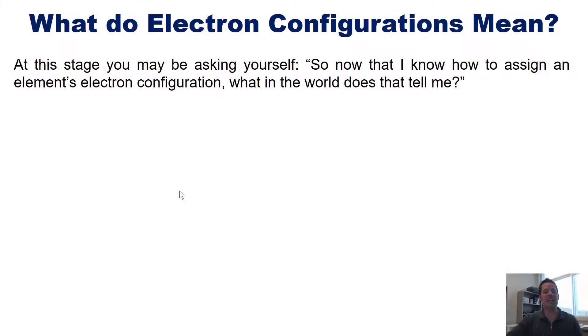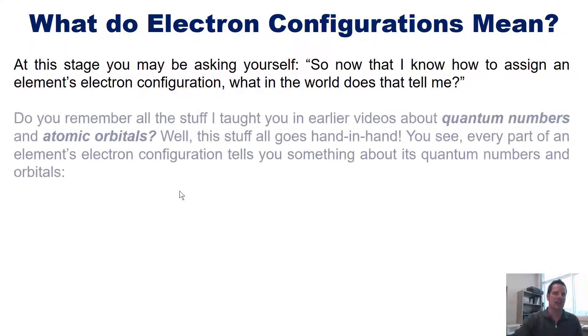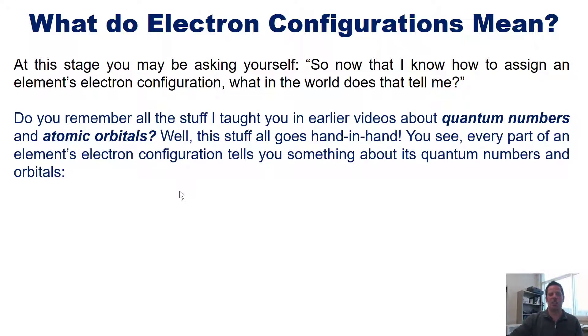Now, at this stage, you might be asking yourself, so now that I know how to assign an element's electron configuration, what in the world does that actually tell me? Well, do you remember all that stuff I taught you in earlier videos about quantum numbers and atomic orbitals? Well, this stuff, this electron configuration stuff, all goes hand in hand. You see, every single part of an element's electron configuration tells you something about its quantum numbers and orbitals.